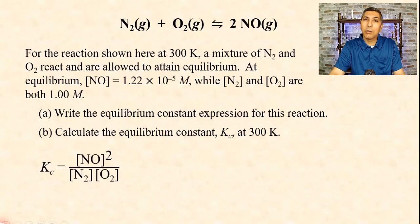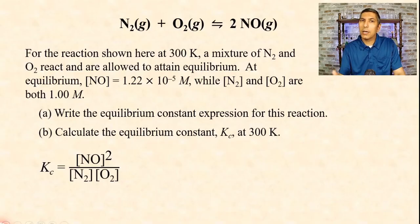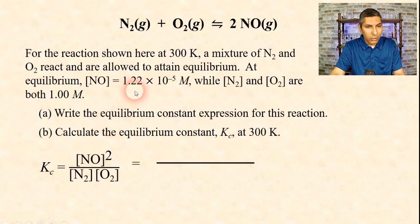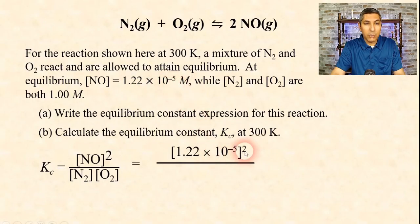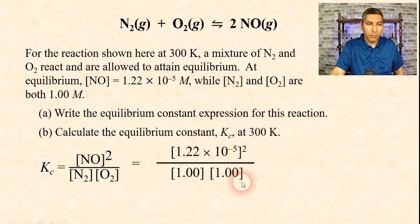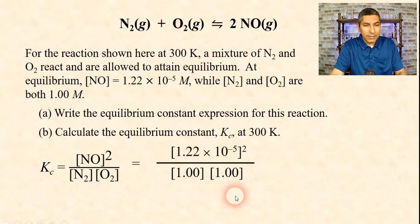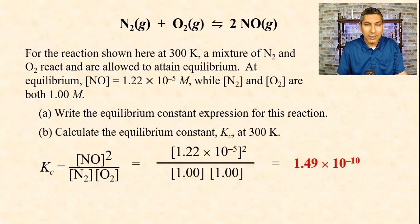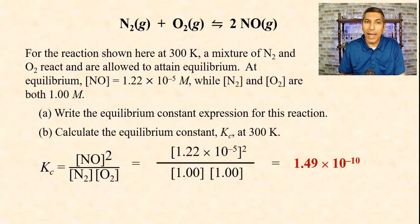Part B says: calculate the equilibrium constant Kc at 300 kelvins. All we have to do is plug those concentrations into the expression we just wrote. So Kc equals — NO has a concentration of 1.22 times 10 to the negative fifth molar, so we plug that in squared. On the denominator, N2 and O2 are both 1.00. Plugging these values into the calculator, the answer is about 1.49 times 10 to the negative tenth. That's the value of Kc for this reaction at this temperature.